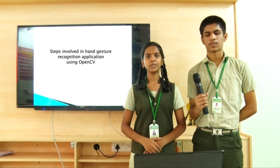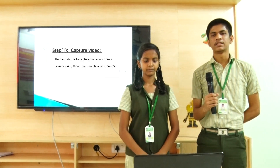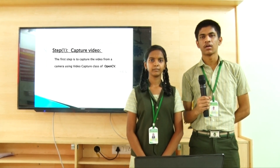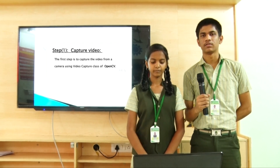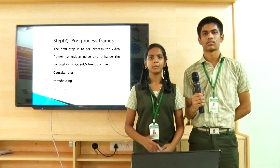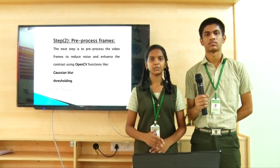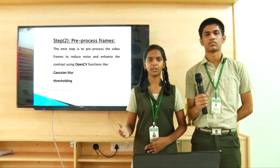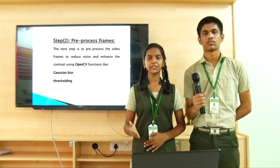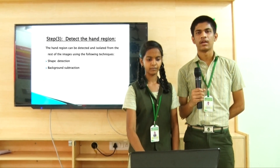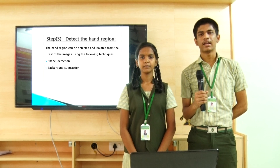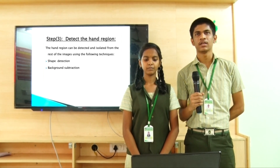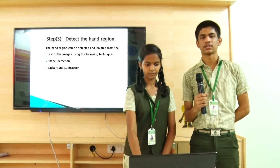The steps involved in this process are: Step 1 — Capture the video. The first step is to capture video from a camera using the video capture class of OpenCV. Step 2 — Pre-process frames. The next step is to pre-process the video frames to reduce noise and enhance the contrast using OpenCV functions like Gaussian blur and thresholding. Step 3 — Detect the hand region. The hand region can be detected and isolated from the rest of the image by using shape detection and background subtraction.